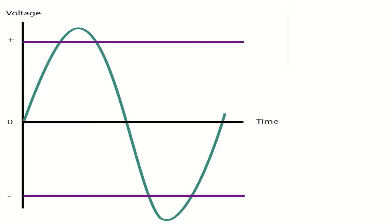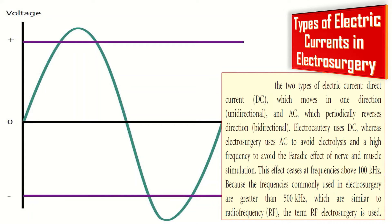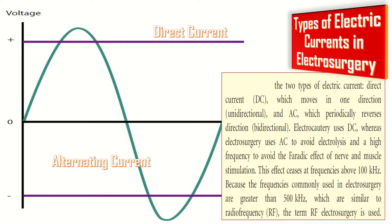The next point is about the types of electric currents in electrosurgery. The two types are direct current, which moves in one direction, and AC current, which periodically reverses direction. Electrocautery uses DC, whereas electrosurgery uses AC to avoid electrolysis and high-frequency to avoid the excitatory effect on nerves and muscle stimulation. The effect ceases at frequencies above 100 kHz.